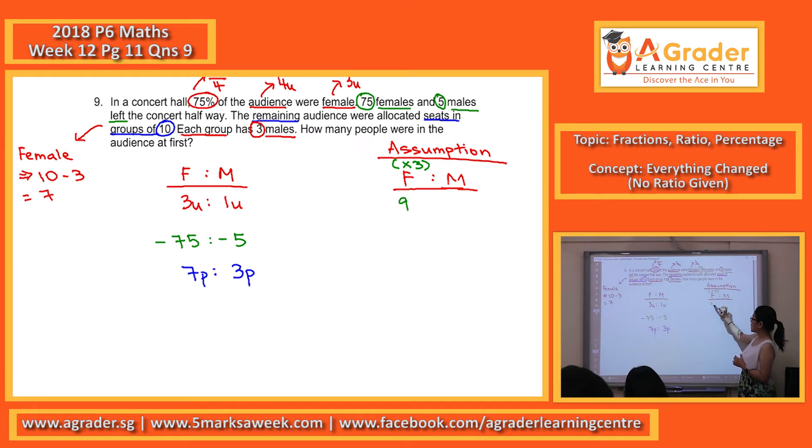So 3 times 3, 9. The negative 75 times 3, you get a negative 225. And 7P times 3, 21P. So we deduct the side for the female.